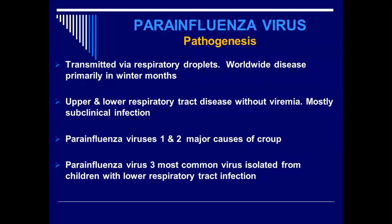The pathogenesis of the parainfluenza virus: the virus is transmitted by respiratory droplets. It is worldwide in distribution and occurs primarily in the winter months. Respiratory droplets are the main source of transmission, which occurs mostly in winter seasons. It causes upper and lower respiratory tract diseases, and there is no viremia — the disease mostly remains localized in the respiratory tract.